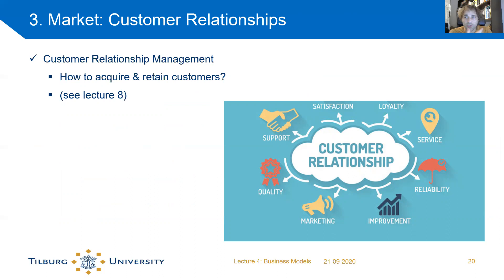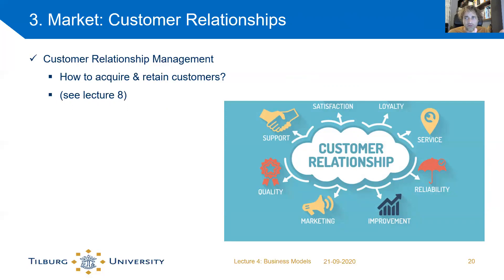The third part of the Business Model Canvas related to the market is customer relationships. This part considers everything about acquiring and retaining customers — it's basically marketing, but also thinking about how to organize your organization to make this work. You need not only marketing but also a good sales team, after-sales support, loyal customers, good service, and a quality product. We will discuss how a customer relationship management system works in an organization and its most important factors in lecture 8.